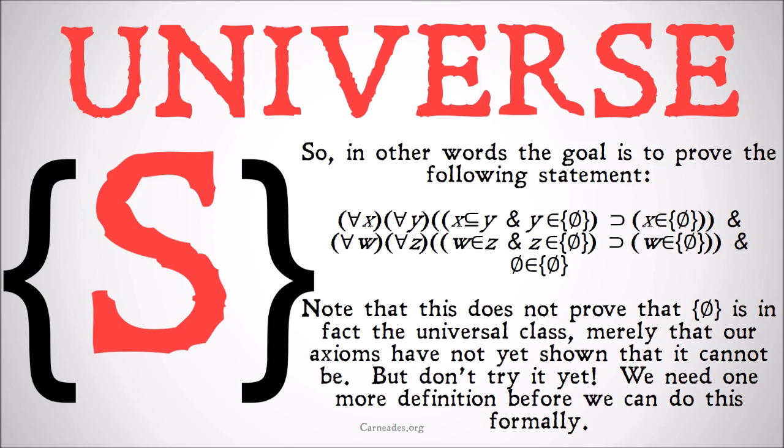Our goal is to prove the following statement. This statement should look familiar if you watched the previous video, because the first two parts are basically the same — saying that this set is transitive and swelled — but we're adding the third axiom. Note that this does not prove that the class of the null set is in fact the universal class.